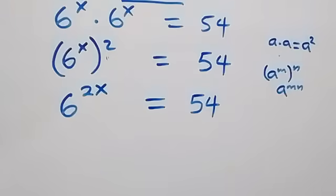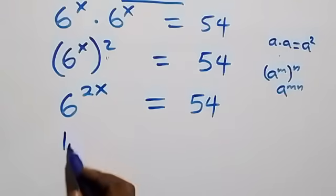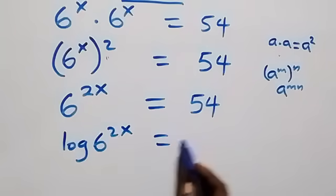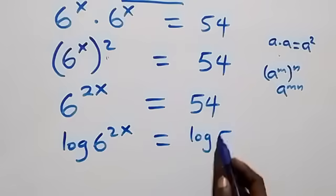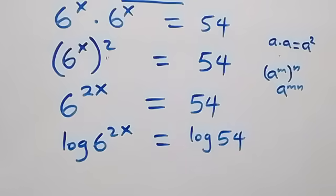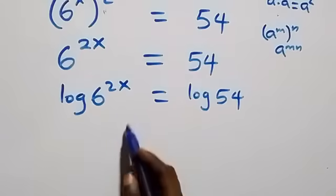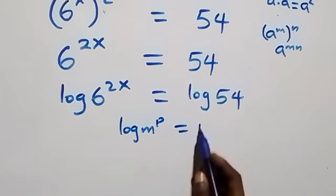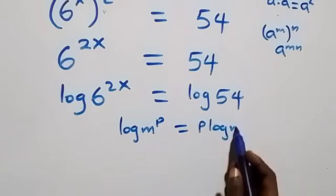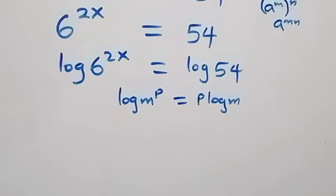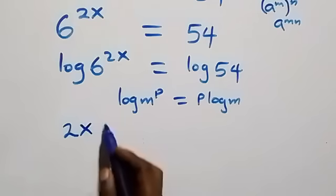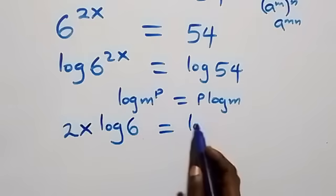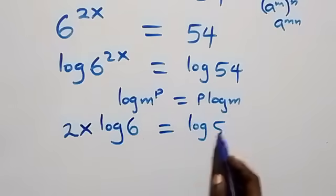Our next step: we take the log on both sides. We have log of 6 raised to power 2x equals log 54. We then apply the power law of logarithm — when we have log m raised to power p, it is the same as p times log m. So what we have becomes 2x log 6 equals log 54.